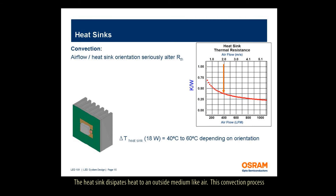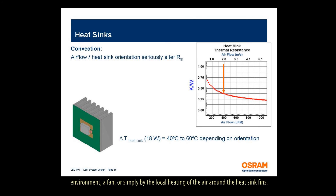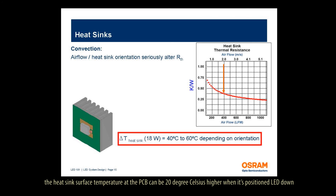The heat sink dissipates heat to an outside medium like air. This convection process significantly influences the thermal performance of a heat sink. Convection increases with the temperature difference, thus the thermal resistance of a heat sink goes down for a higher heat flux. The heat exchange also increases with the speed of the airflow, which could be provided by the environment, a fan, or simply by local heating of the air around the heat sink fins. That makes the performance of heat sinks orientation dependent. As shown in the example, the heat sink surface temperature at the PCB can be 20 degrees Celsius higher when it is positioned LED down compared to the shown orientation.